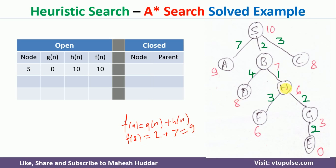When you are at node H, f(H) equals g(H), where g(H) is the cost to reach from S to H, that is 2 plus 1 equals 3, and h(H) equals 6, giving f(H) = 9. This is how we calculate the f value for each node.